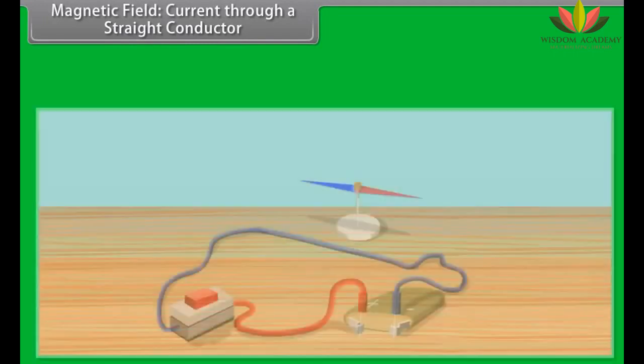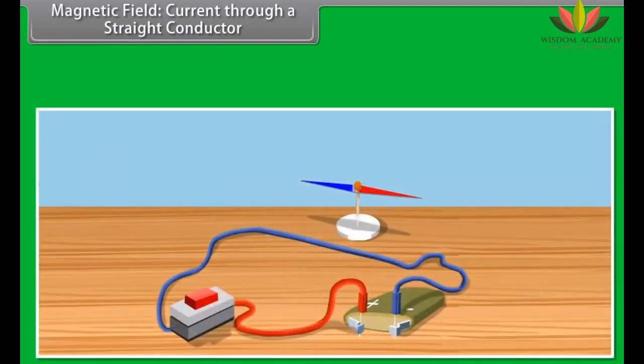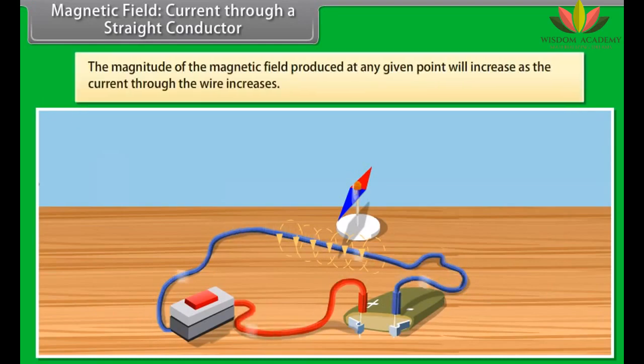Magnetic field current through a straight conductor. As you have seen earlier, let us see what happens when we change the current that is passing through the wire. The effect on the compass also varies. So, if you increase the current, the deflection of the needle of compass will increase. From this we know that the magnitude of the magnetic field produced at any given point will increase as the current through the wire increases.